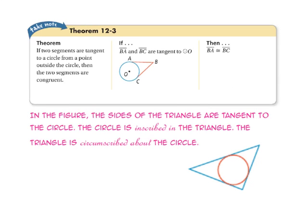Theorem 12-3 states that if two segments are tangent to a circle from a point outside the circle, then the two segments are congruent. In this figure, the sides of the triangle are tangent to the circle — the circle is inscribed in the triangle, and the triangle is circumscribed about the circle. Since each segment is tangent to the circle, we know that each pair of tangent segments from the same external point are congruent.